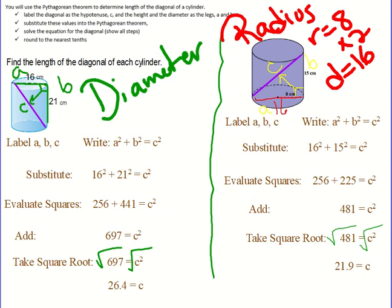If you're given the radius and the height you have to first take that radius and multiply it by two to get the diameter. Once you have the diameter and the height you can substitute into the Pythagorean Theorem formula. And that wraps up this example.